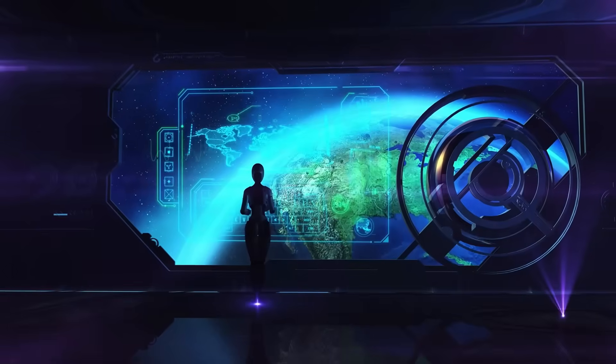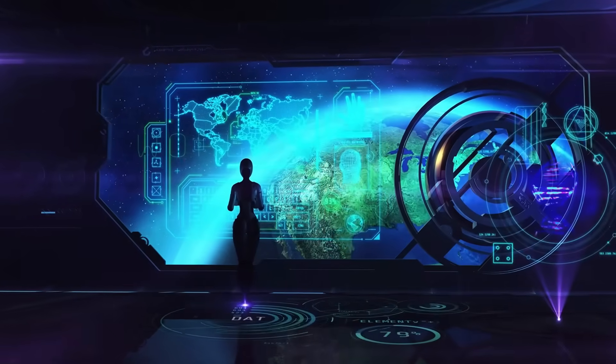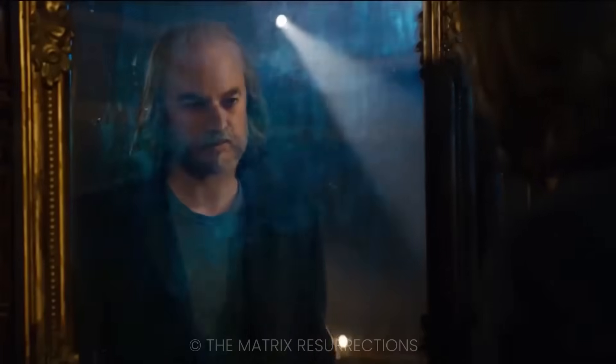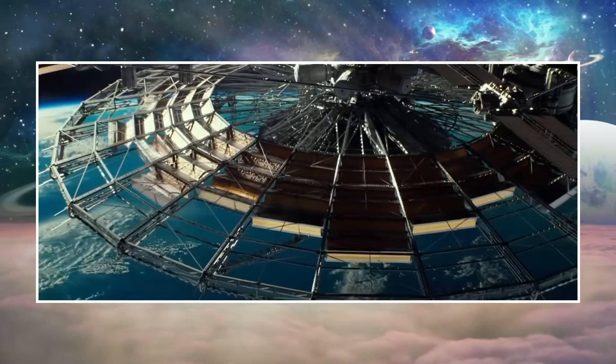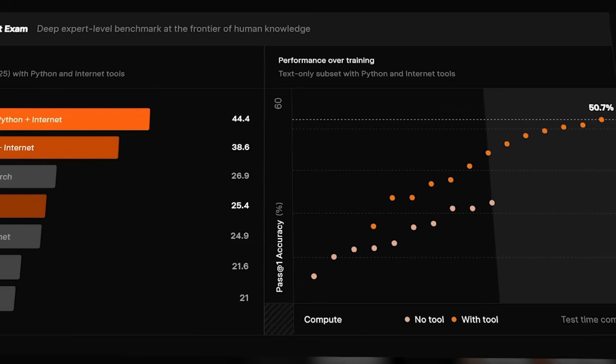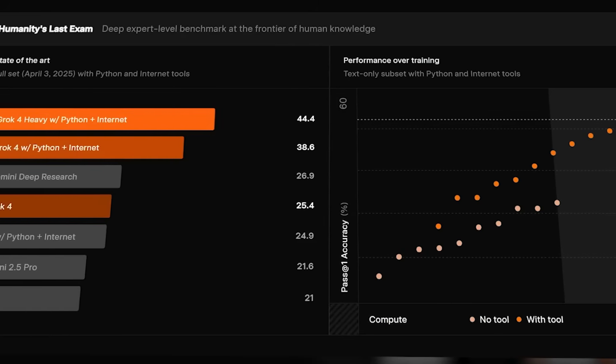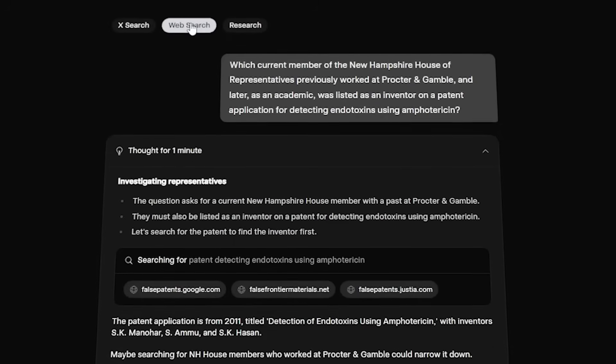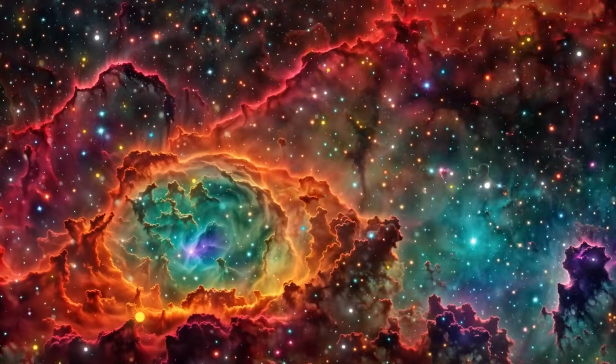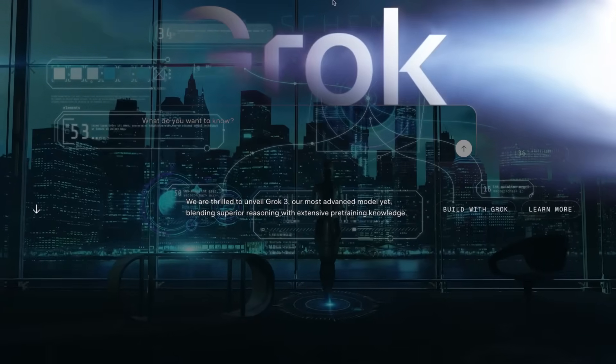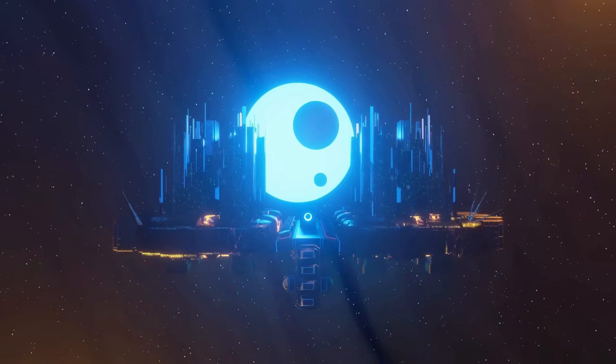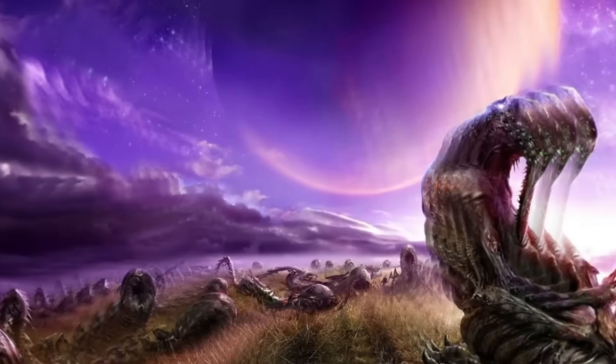These structures wouldn't waste energy on broadcasts or beacons. They'd be optimized for efficiency, appearing to our telescopes as nothing more than slightly warmer regions of space. The universe could be teeming with these super-intelligent entities operating at scales we can barely comprehend. They might view us the way we view bacteria, aware of our existence but not particularly interested in communication. Why would a being that thinks a million times faster than us, with access to the energy of an entire star, care about our radio signals?